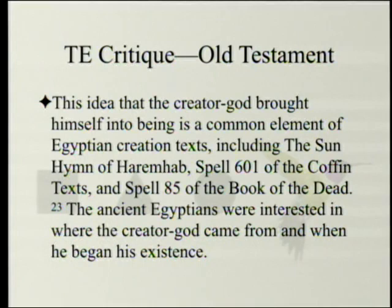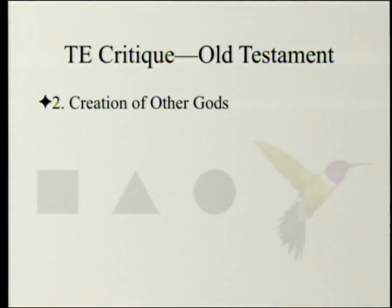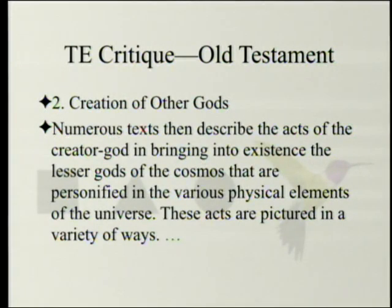Creation of other gods: numerous texts describe the acts of the Creator God in bringing into existence the lesser gods of the cosmos that are personified in the various physical elements of the universe. Spell 245 of the Coffin Text alludes to an earlier text when the god Shu says to the Creator God Atum: 'This was the manner of your engendering. You conceived with your mouth and you gave birth from your hand in the pleasure of emission. I am the star that came forth from the two.'